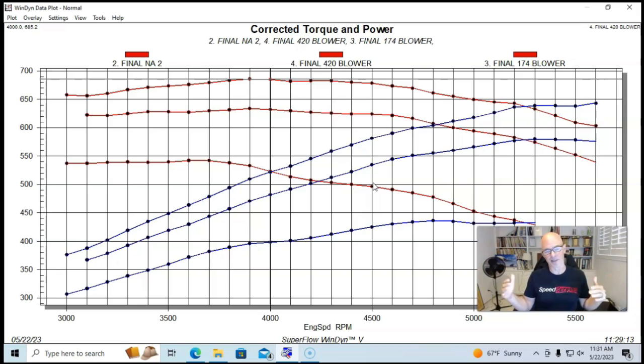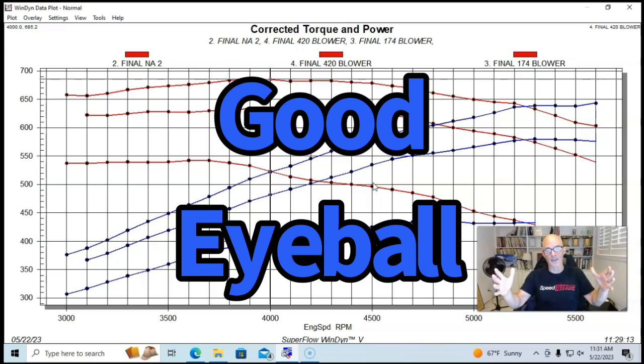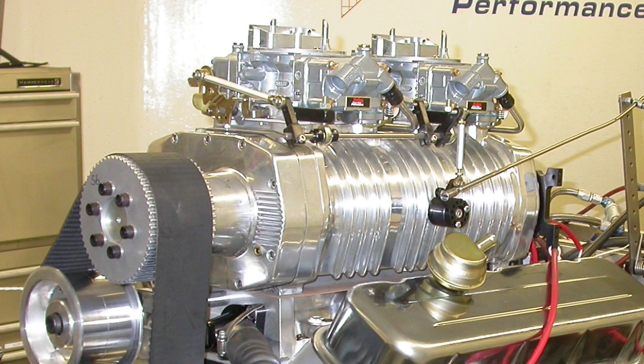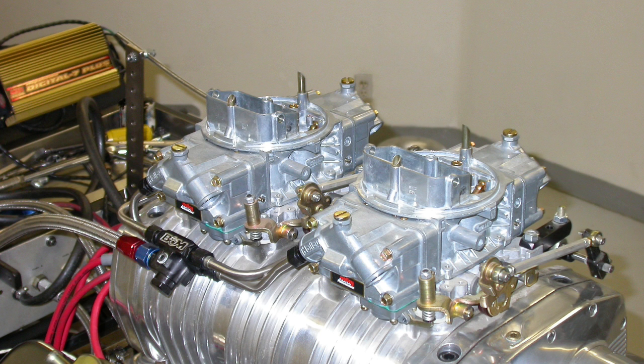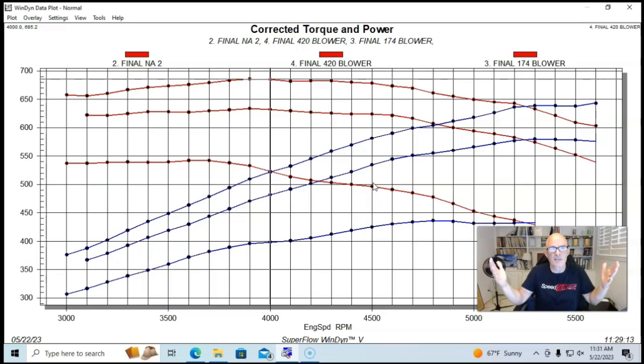We again ran this thing at 30 degrees of total timing on the blower. This was a good combination for a number of reasons. First of all, it made quite a bit more power than the single carb 174 blower, but also it just looked better having a bigger blower on there. When you have something that looks kind of like a 671 blower and you have two carburetors on there, in the visual department it looks very, very well.